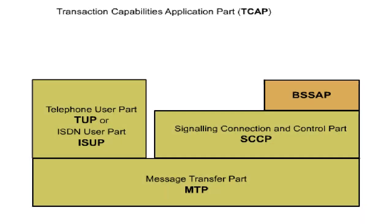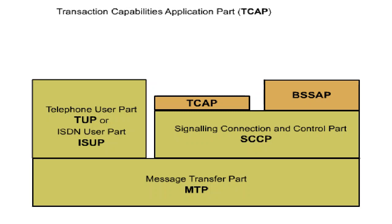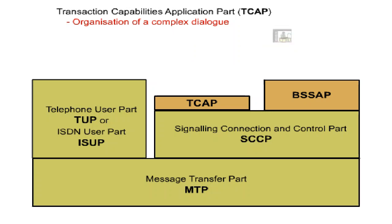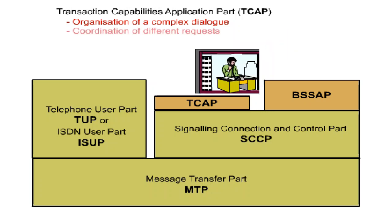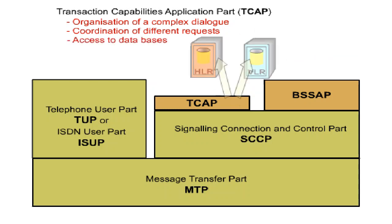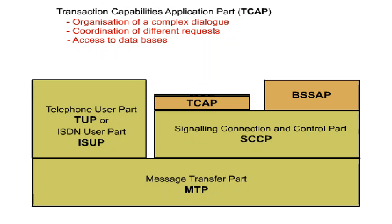The Transaction Capabilities Application Part, TCAP, is a protocol layer which resides directly on top of SCCP. TCAP is able, for example, to organise a complex dialogue between an MSC and an HLR, including a sequence of successive requests and replies. TCAP functions like a secretary's office where many different requests are brought into the correct sequence and distributed. TCAP handles the access to databases like the HLR or the VLR. It must exist so that a higher protocol, the Mobile Application Part, MAP, can be used.